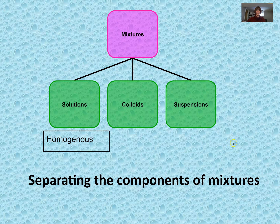The second type is a heterogeneous mixture. Colloids and suspensions fall into this category. A colloid has small and medium particles — it appears cloudy because you can't see the differences between those particles, giving a cloudy appearance in your flask or beaker. In a suspension you can actually see particles floating in the flask, so there are small, medium, and large particles present.